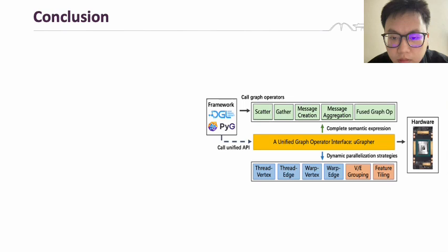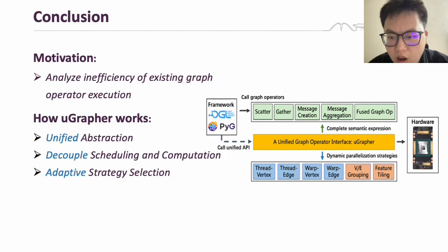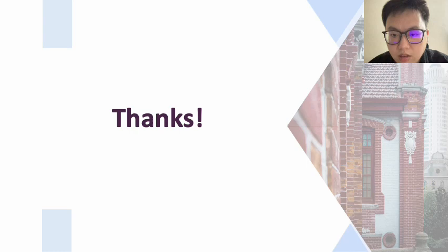Now, we get to the conclusion. In this work, we analyze the inefficiency of existing GNN frameworks at the kernel level for different graph operators and different input graph datasets. We propose a unified abstraction. Based on decoupling computation and scheduling on this abstraction, we are able to automatically provide high-performance generation of computation code for different scenarios. Additionally, we design a unified interface UGraph. Based on UGraph, we are able to achieve an average performance improvement of 3.5x compared to previous methods. Thanks for listening.